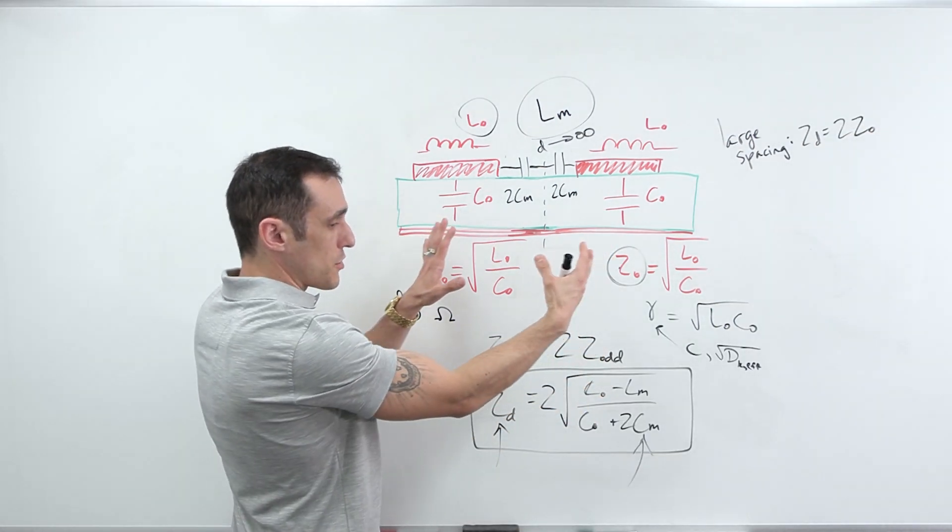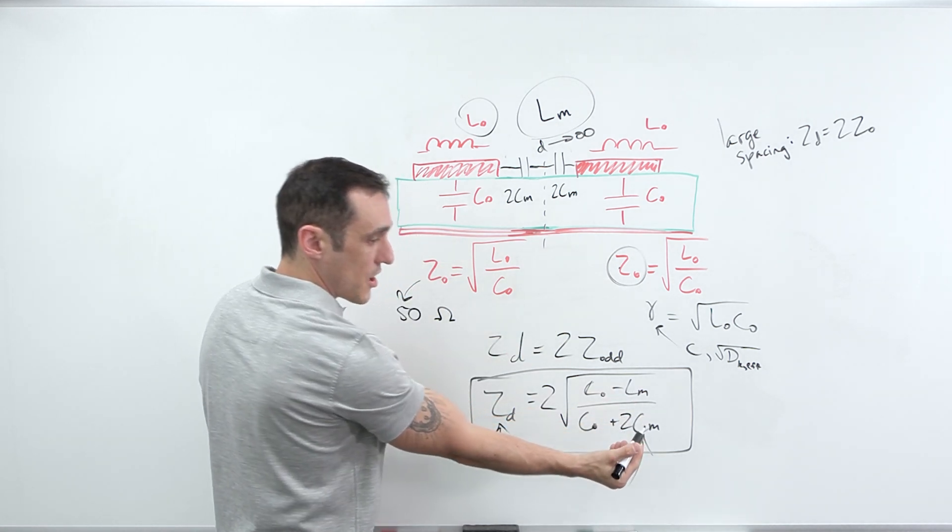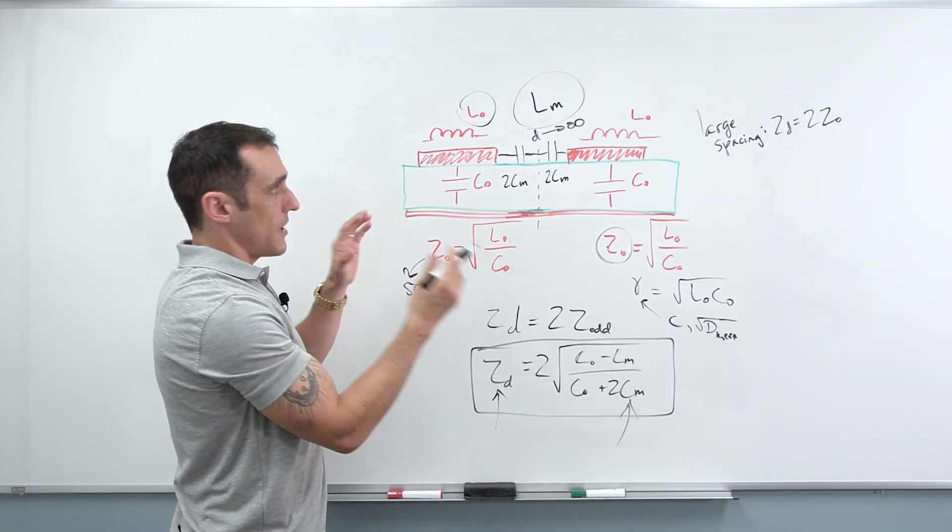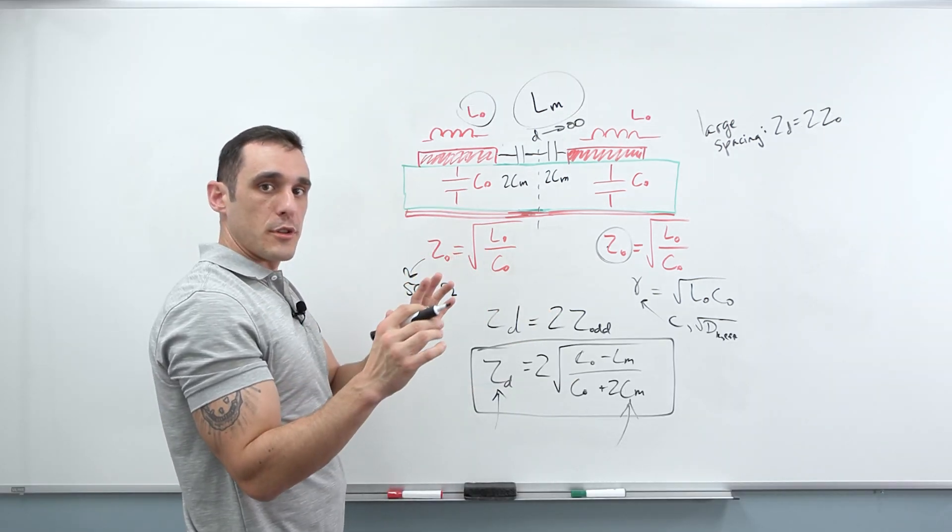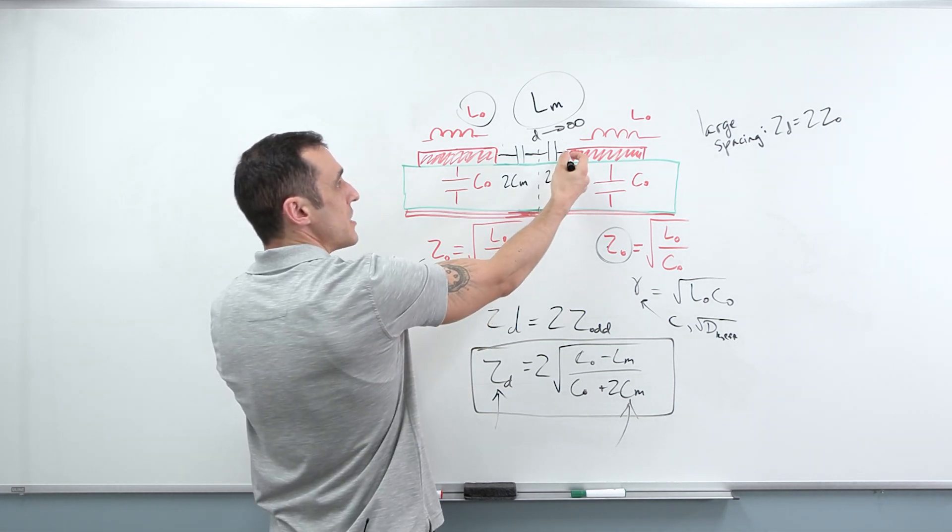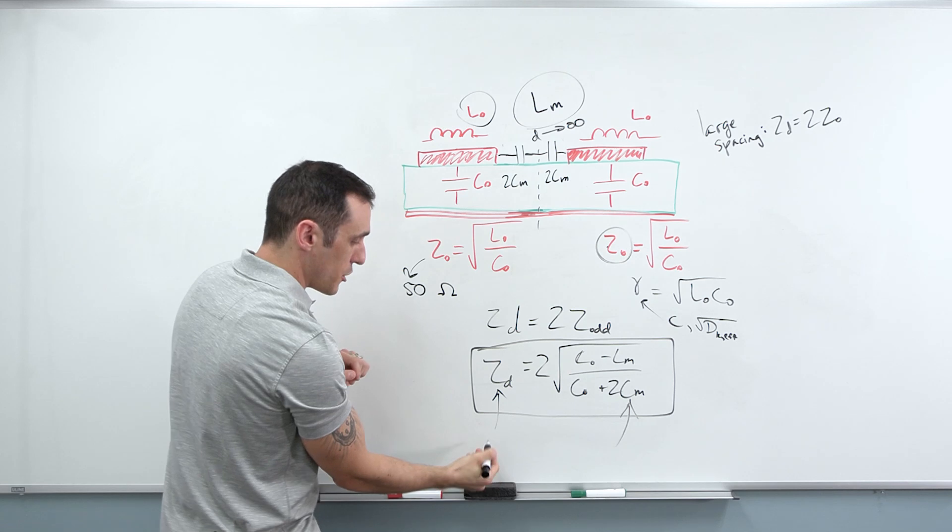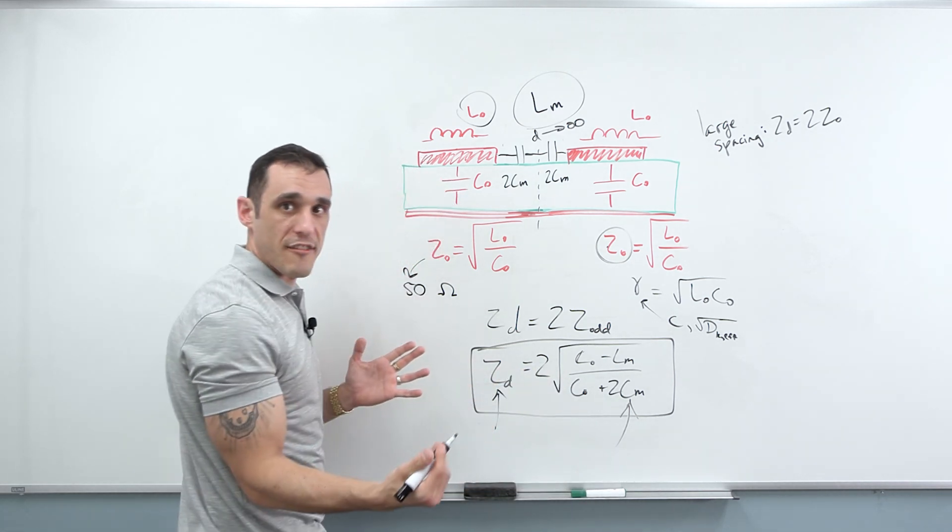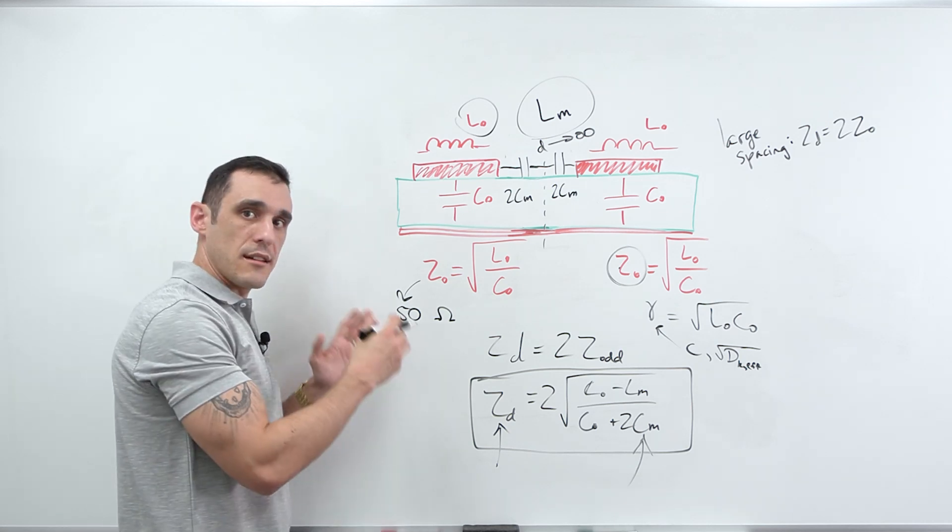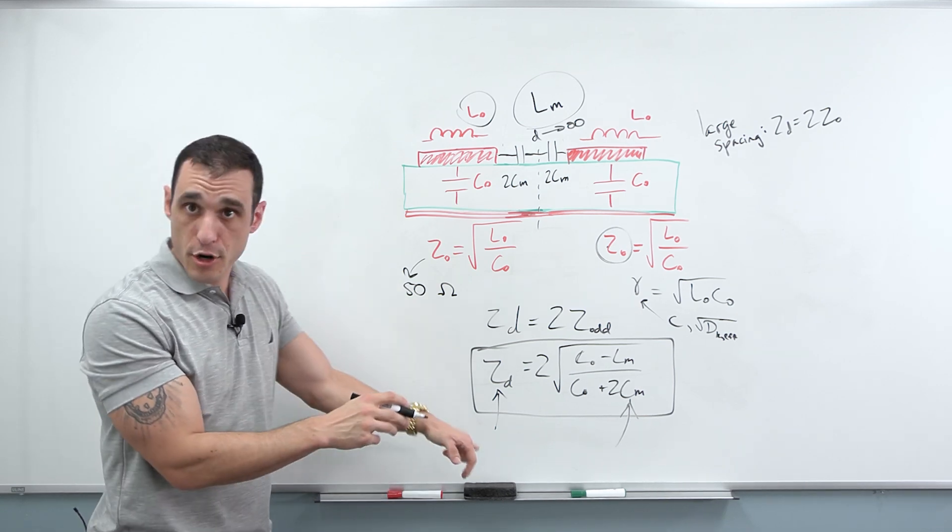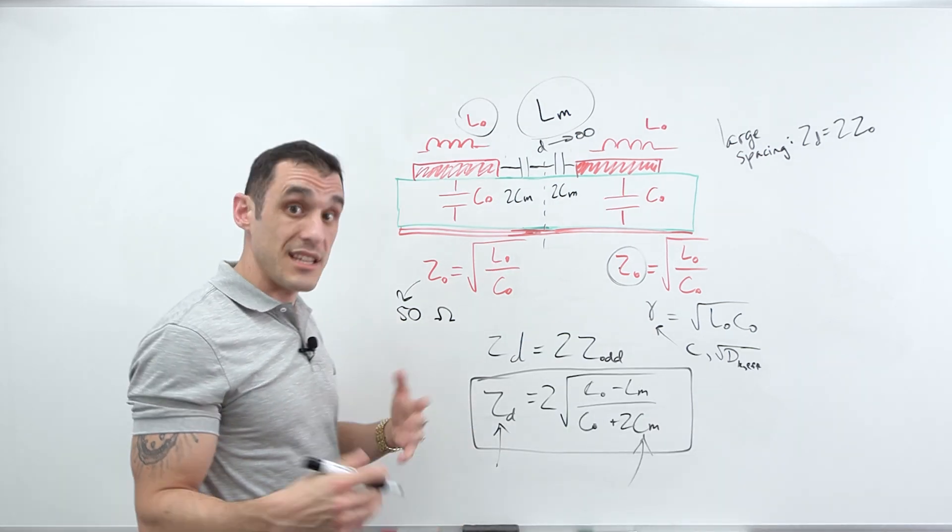If we start to bring them closer together, this term is non-zero. This term is non-zero. And so now we have a different value for the differential impedance. Again, this is where you would want to take your field solver application. And what I would say is just figure out the minimum distance that you need to hit your differential impedance target within plus or minus 5%. That value is usually a hundred ohms or a little bit less. One exception here to the 50 ohm and a hundred ohm single ended and differential impedance is DDR.